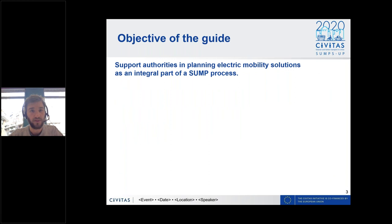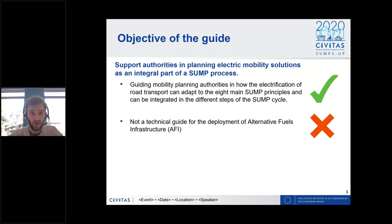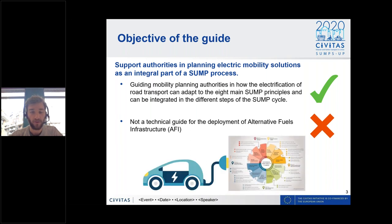This guide is focused on electric mobility as it is the technology most actively developing in cities, though we acknowledge electric mobility is not the only alternative fuel and hopefully other guides on other fuel types will complement this one. The objective of the guide is to guide mobility planning authorities — cities and regions — in the process of electrification of road transport, and how this adapts to the eight main SUMP principles and can be integrated into the different SUMP steps. Importantly, this is not a technical guide for the actual deployment of alternative fuels infrastructure, but rather makes the connection between electric mobility and sustainable urban mobility planning.